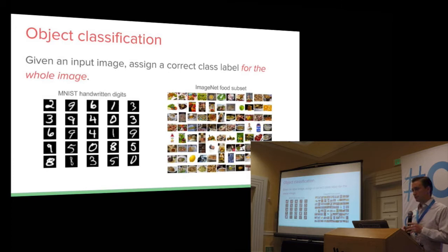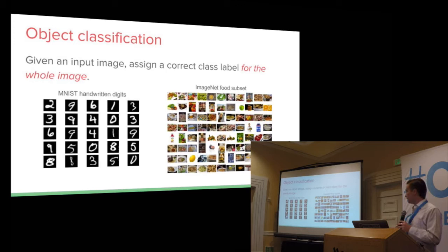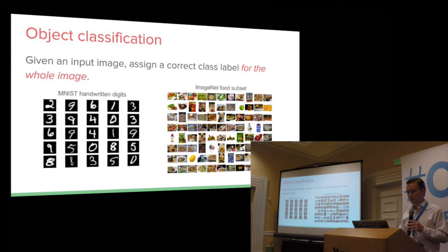The main problem we're going to work on in this workshop is object classification. We're going to be using the MNIST handwritten digits dataset. The object classification problem is: given an entire image, can you classify what the label is? In the case of handwritten digits, is this a zero through nine? Another famous academic dataset is called ImageNet, which has different objects - a dog, a cat, a lemon. Given the entire image, can you classify a correct label for what's in that image?